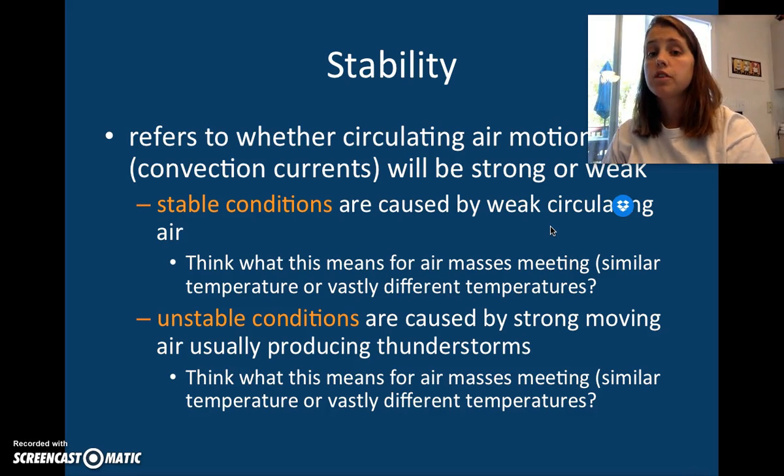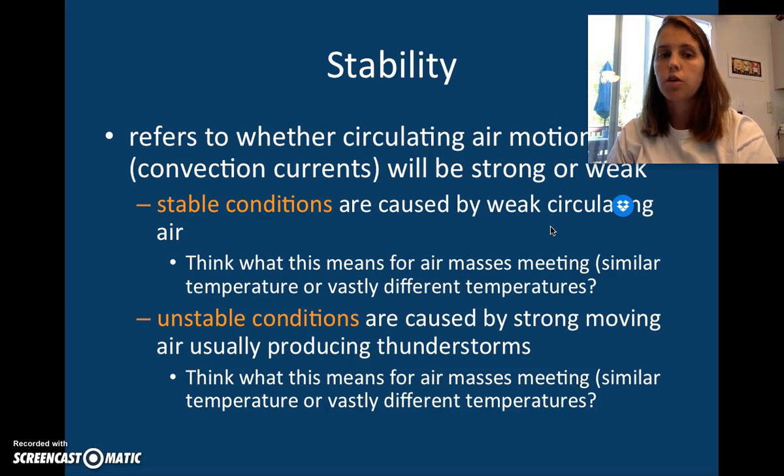Stability refers to whether circulating air motion or convection currents will be strong or weak. When there's stable conditions, that is weak circulating. Basically, if two different temperatures meet, you're going to get winds. And when the winds meet, you are going to get very weak circulating because the temperatures of them are not very strong. Unstable conditions are caused by strong moving air, which usually produces thunderstorms. This is when you have two air masses that meet that have very different temperatures.